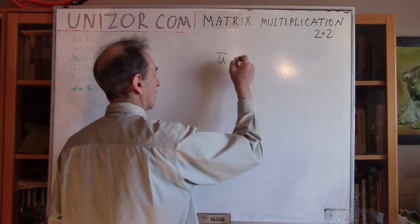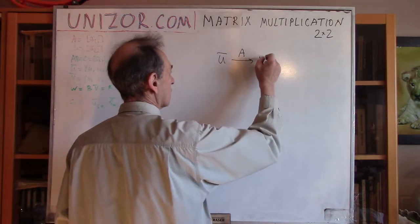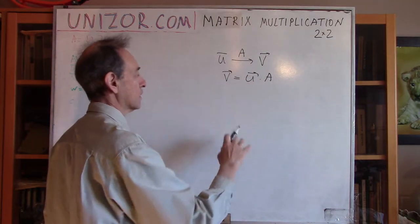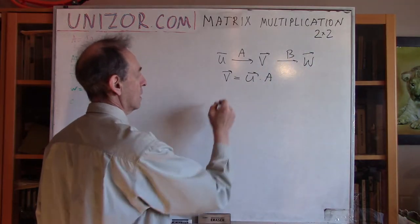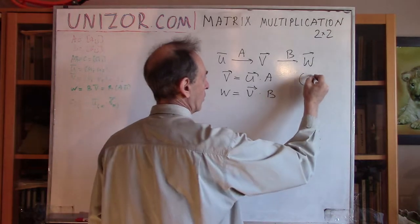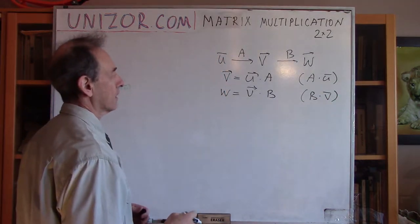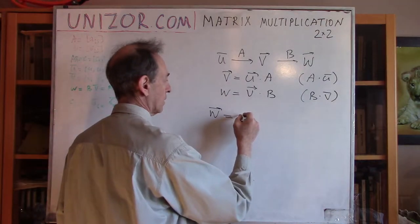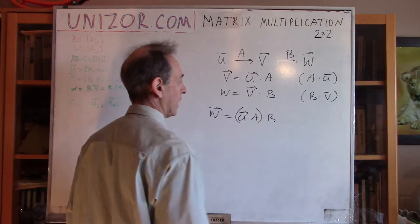If you take the vector U and apply a certain linear transformation reflected in some matrix A into vector V, then V equals U multiplied by A. Then if you have a next transformation into vector W, W equals V times B. What is really important is that the W vector is the combination of vector U, matrix A, and then the result is multiplied by matrix B.